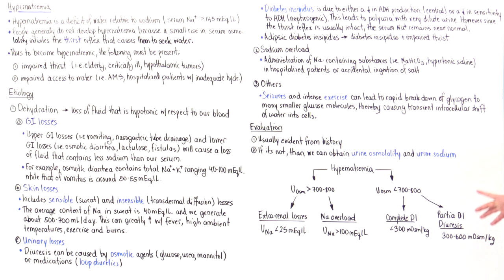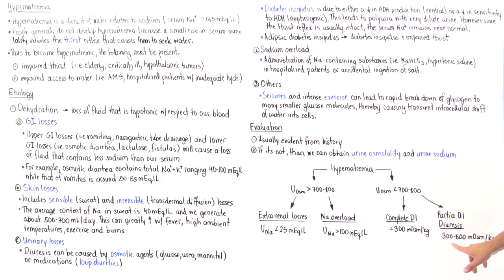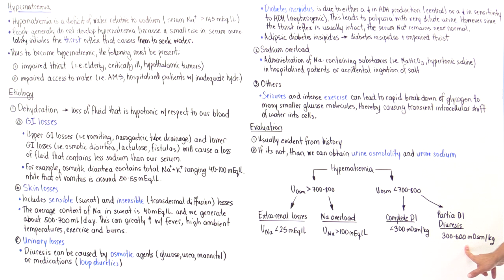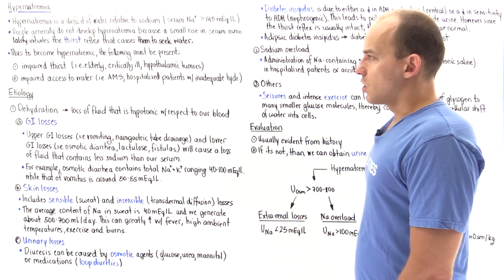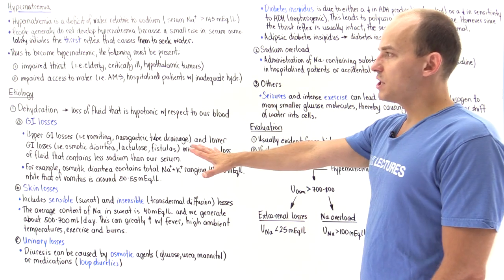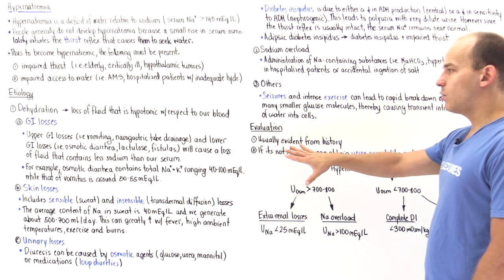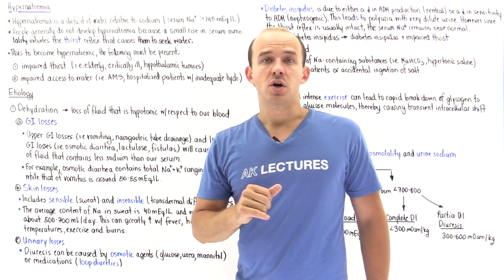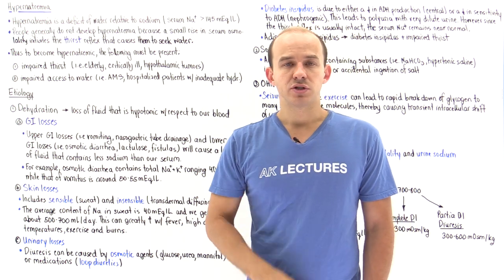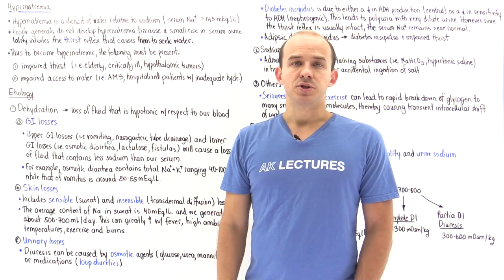If we have partial diabetes insipidus or are taking loop diuretics, the urine osmolality will be between 300 to 600 milliosmoles per kilogram. So we now know the etiology and how to evaluate patients with hypernatremia. In the next lecture, we'll talk about how to actually treat patients with hypernatremia.